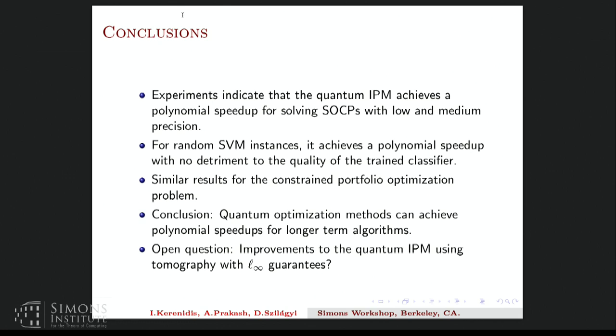So we find some experimental support for the idea that the quantum IPM achieves a polynomial speedup for SOCPs with low and medium precision requirements. And for random SVM instances, it seems to get a polynomial speedup with some exponent. And we obtain similar results for another instance of the SOCP, which is the portfolio optimization problem. So I have a few slides on it if time permits, but the results are very much similar. So it's not something radically different.